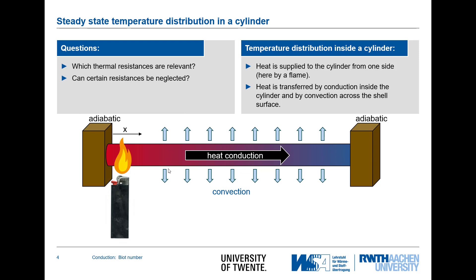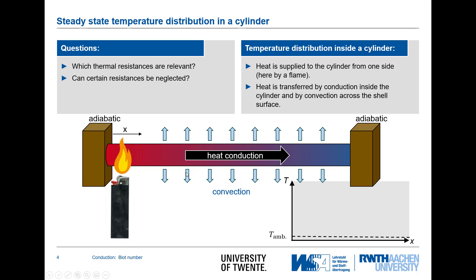The question is what thermal resistances are important in this process. Of course we have conduction — a conductive resistance — and on the other side we have convection. It can also be that there is heat conduction in the radial direction, meaning there might be a significant variation in the radial temperature profile. Let's look at how to characterize that and distinguish between cases where a radial resistance is or is not significant.